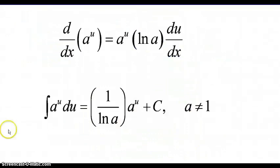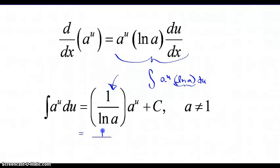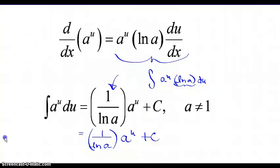Make sure all of that is in your notes. It follows from the derivative that if we are integrating a to the u, the anti-derivative function should include a to the u times the natural log of a times du. If that factor is absent, we account for it in the anti-derivative. So the anti-derivative of a to the u using u-substitution is 1 over the natural log of the base times a to the u plus C.